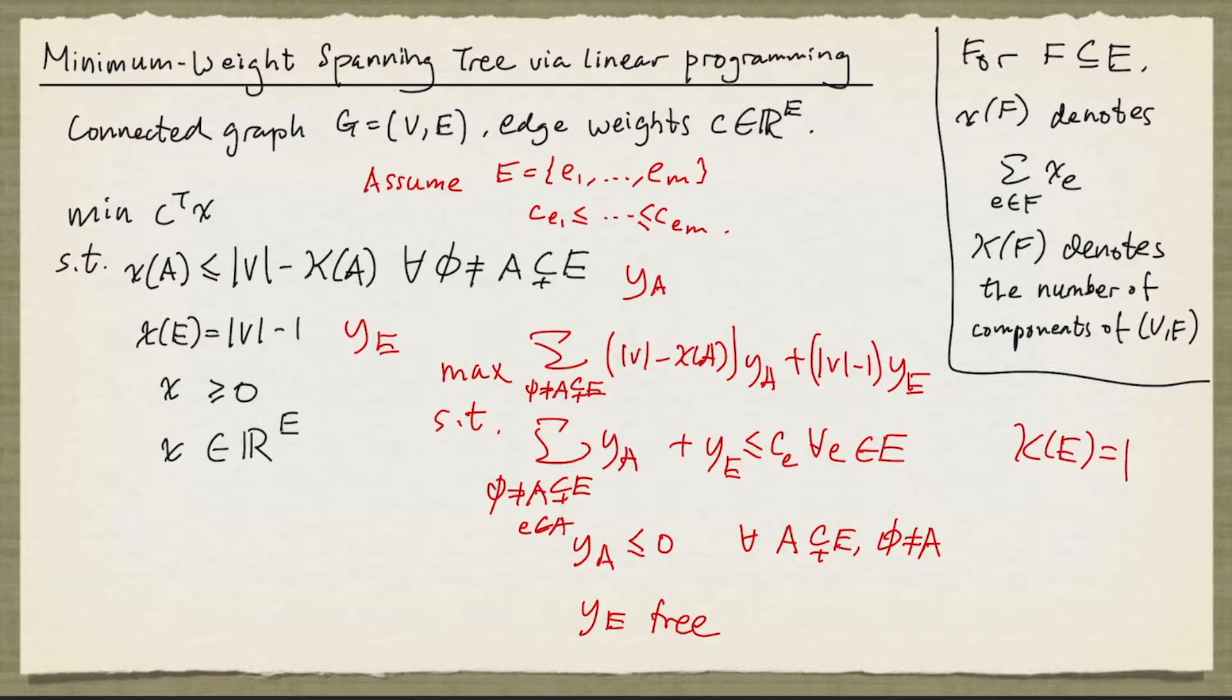Recall that kappa of f denotes the number of components of the graph v, f. So we can rewrite this objective function as follows. We simply allow a to be equal to e. And we can also do something similar to this constraint here by removing y of e and allowing a to be e.